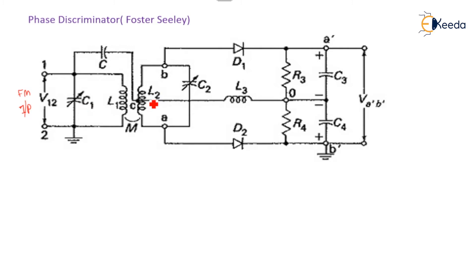The secondary of this transformer is also center tapped. Here additional arrangement is made that is radio frequency choke inserted across the center tap, so that any variation in that frequency will not affect the output voltage.